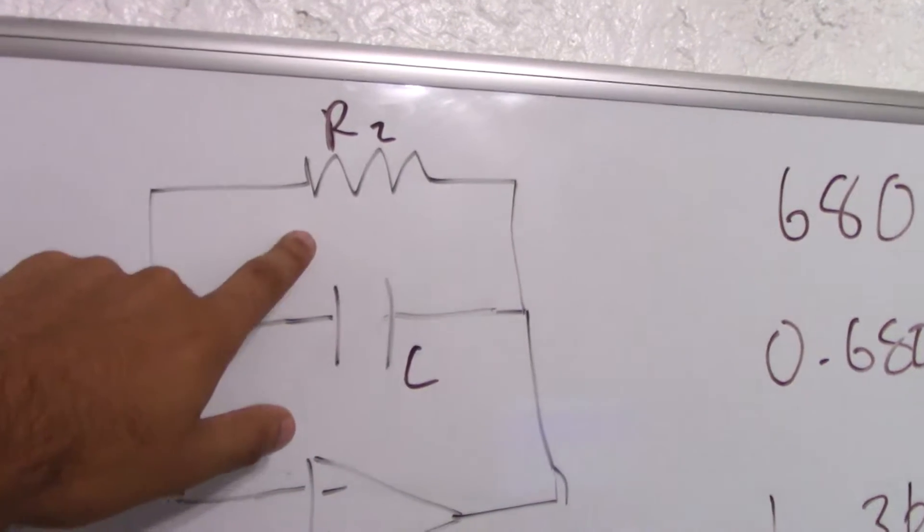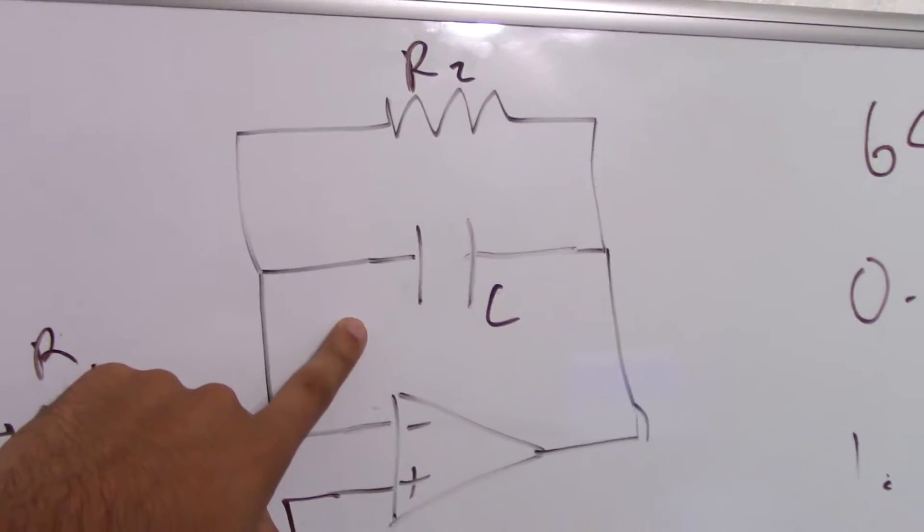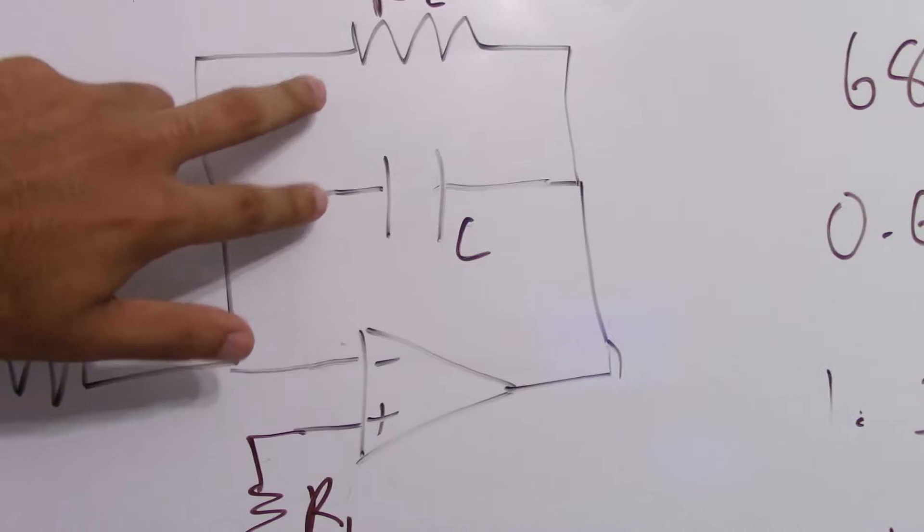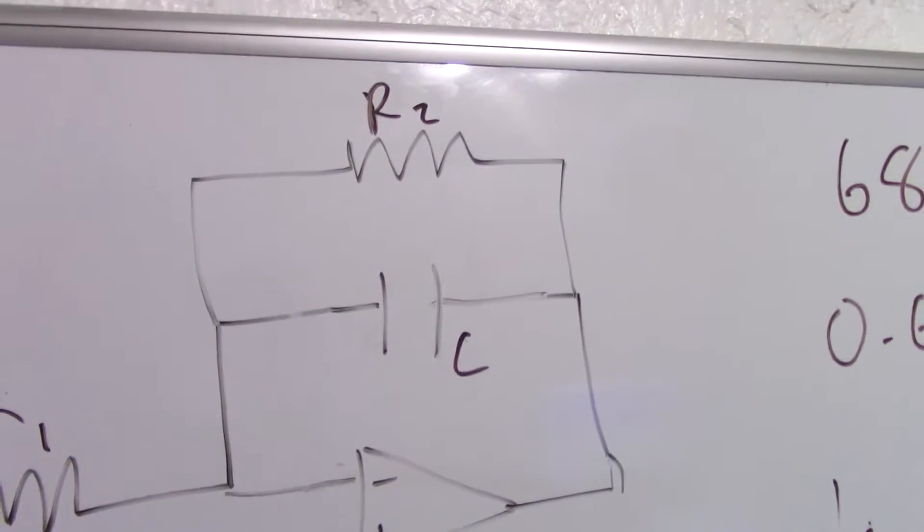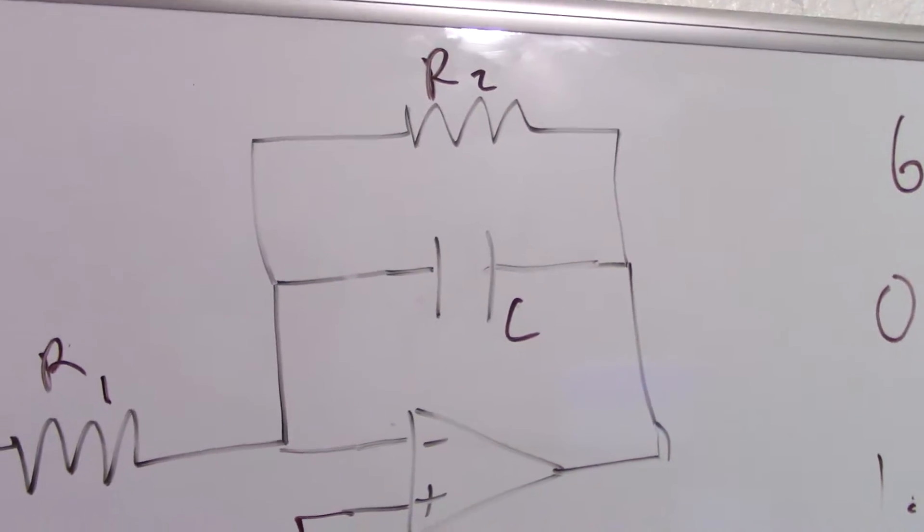So there's actually another resistor in parallel with this capacitor. And what that does, these two values, these R2 times C, actually changes the rise time of the integration.